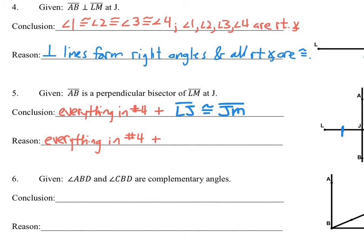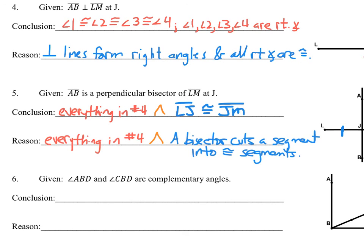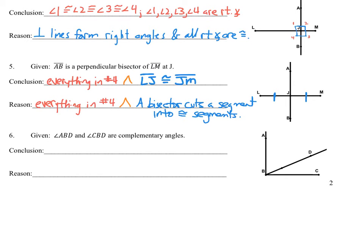So we're merging ideas together. When you tackle a proof with statements and reasons in a two-column format, you'll see that's going to be the norm. Problem 6, last one on this page: ABD and CBD are complementary angles. Complementary angles are angles that add to 90 degrees. Just by knowing what a complementary angle is, I already have the reason.